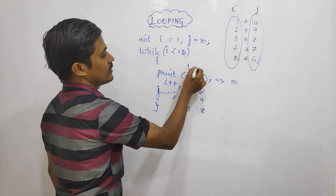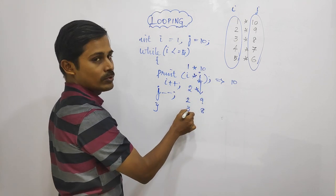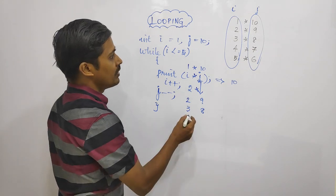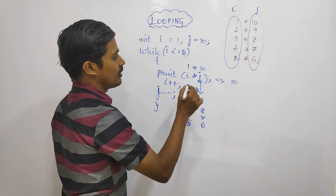First, i equals 1, j equals 10. Then i equals 2, j equals 9. Then i equals 3, j equals 8. If i equals 4, j equals 7. i equals 5, j equals 6.